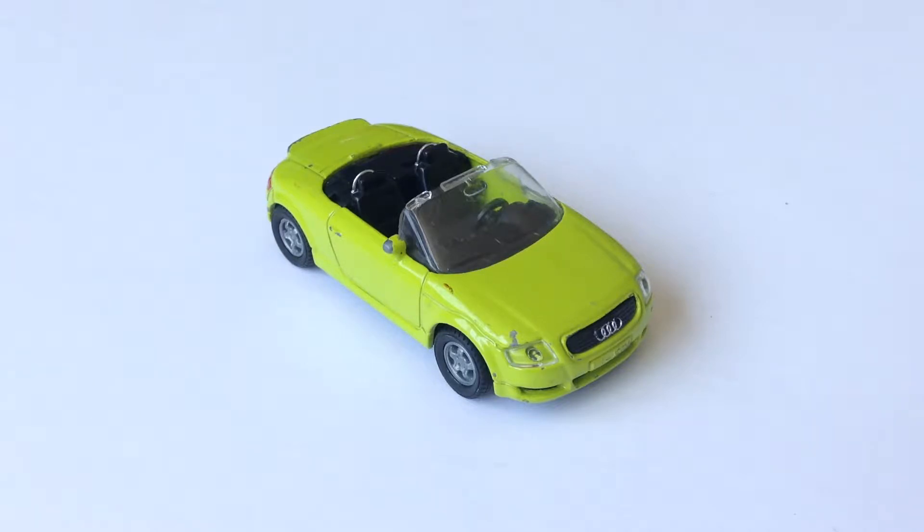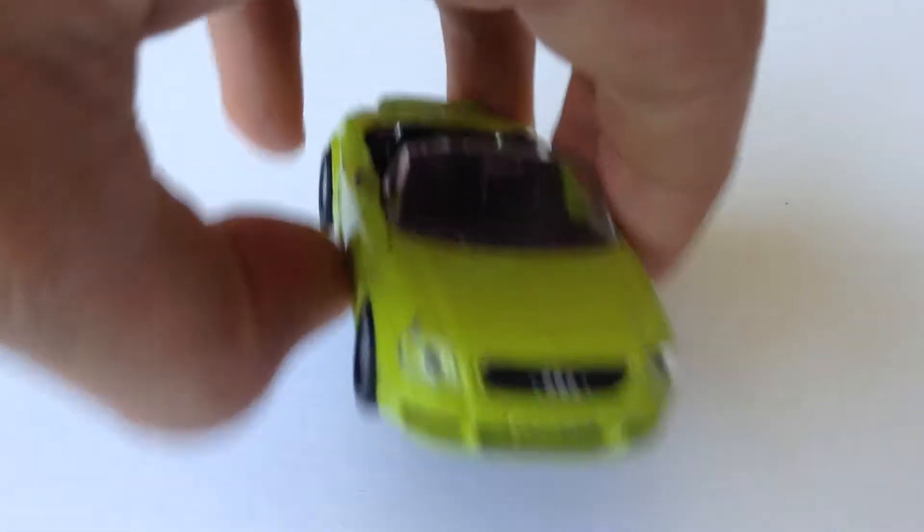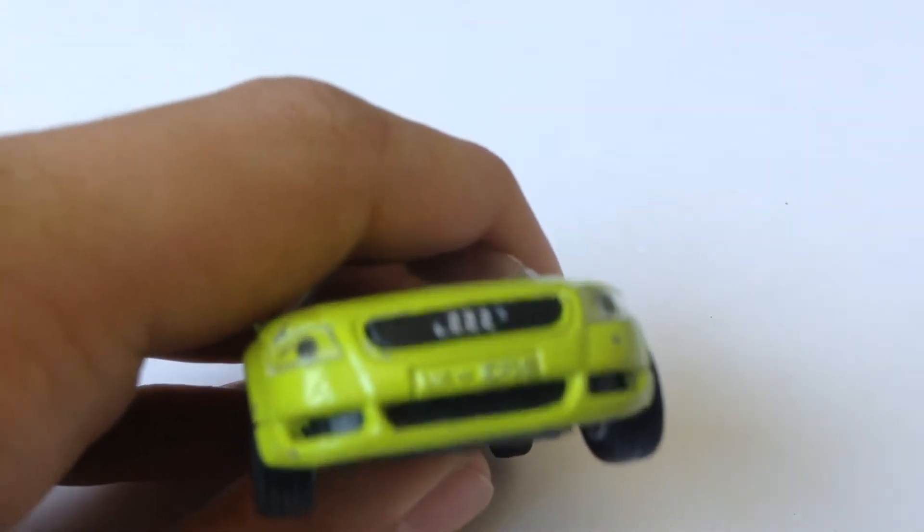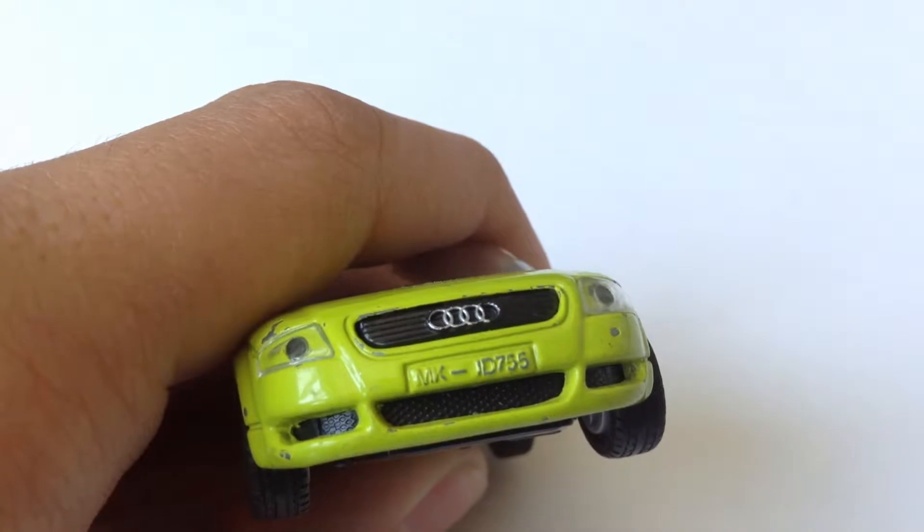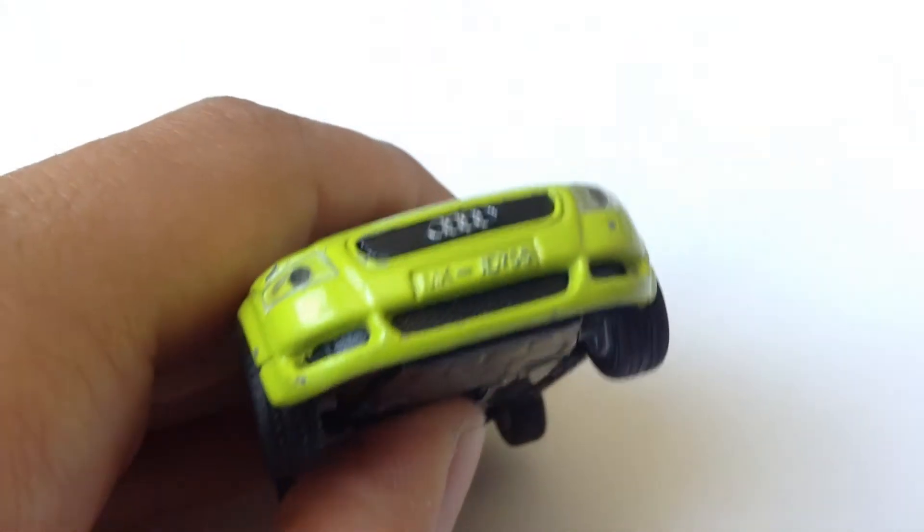Now as you guys can see, it has the nice Audi logo up front, which I like about this car because the Audi logo is pretty detailed. I mean, there's nothing else to it. This is how it looks in real life. This is how it looks in toy life.